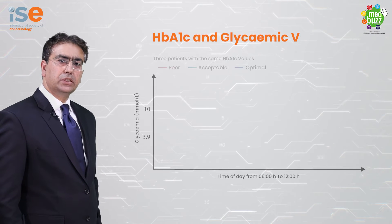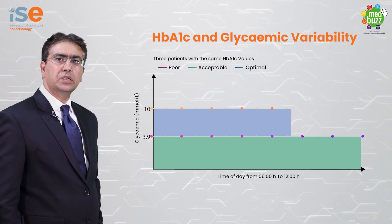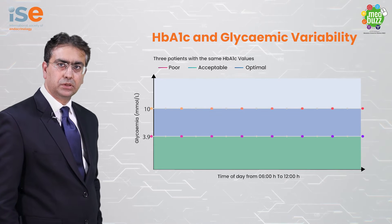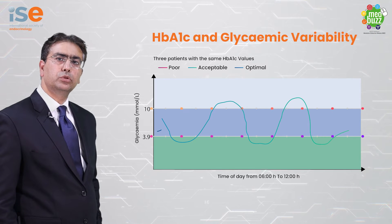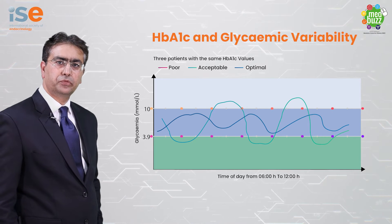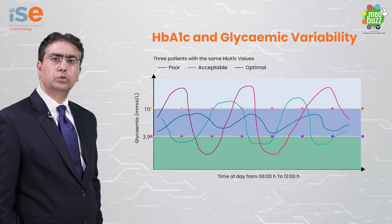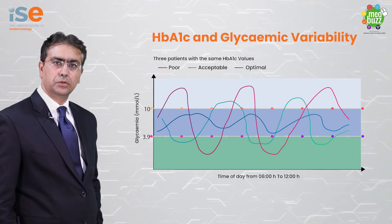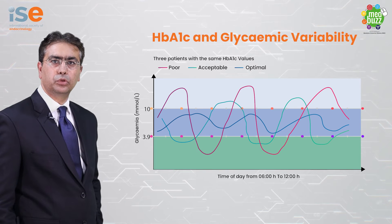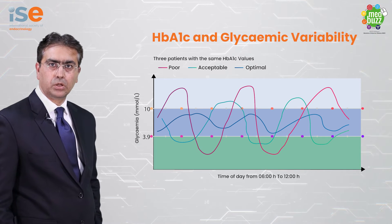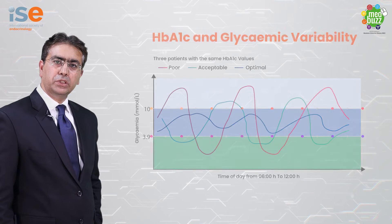Here you can see three patients with the same HbA1c value of 7%, but as you can see from their glucose profile, they have a very different glucose profile based on their continuous glucose monitoring. For this reason, diabetologists and endocrinologists all over the world have been using a new metric called time in range.